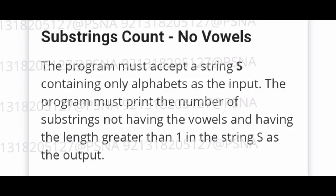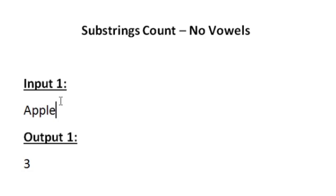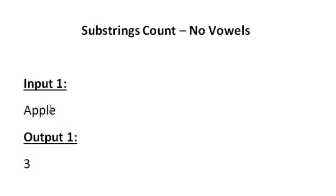This is the question asked in today's SkillRack daily challenge. We are given a string as input and we have to generate all possible substrings of length greater than or equal to 2, and our task is to print the number of substrings which have no vowels in it.